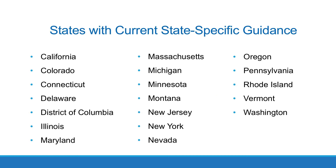State-specific nondiscrimination guidance continues to stand in California, Colorado, Connecticut, Delaware, the District of Columbia, Illinois, Maryland, Massachusetts, Michigan, Minnesota, Montana, New Jersey, New York, Nevada, Oregon, Pennsylvania, Rhode Island, Vermont, and Washington.